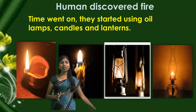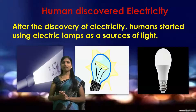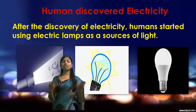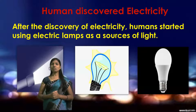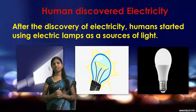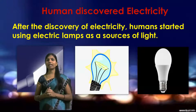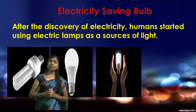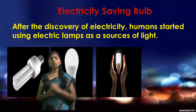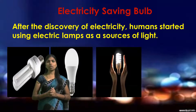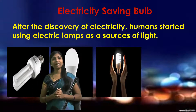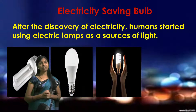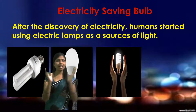After the discovery of electricity, humans started using electric lamps as sources of light. Here I have shown you some electric sources of light. Humans started using many different types of electric sources. To save electricity, they developed different types of electric bulbs like CFL bulbs and LED bulbs, which help us save electricity.